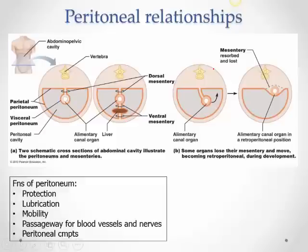When an organ pushes so deep into the peritoneal cavity, it creates a double fold of peritoneum which allows the organ to be mobile. This double fold of peritoneum is known as mesentery.